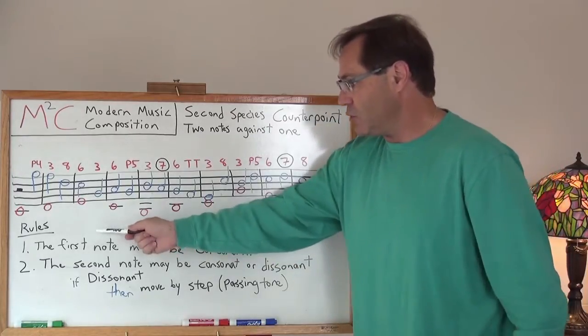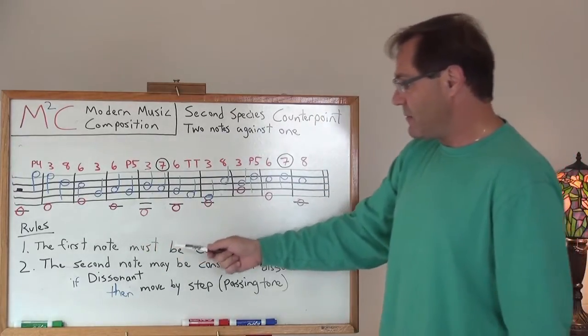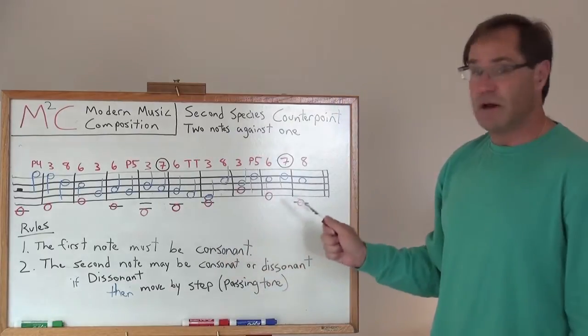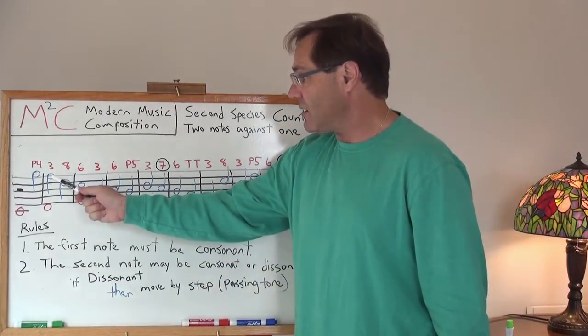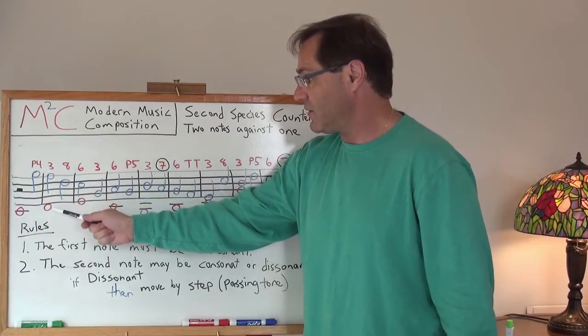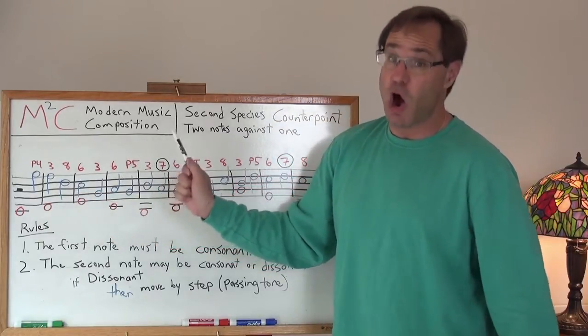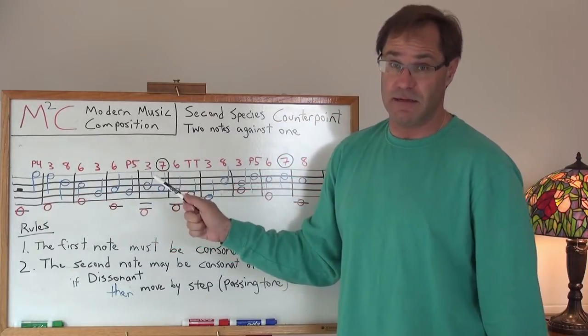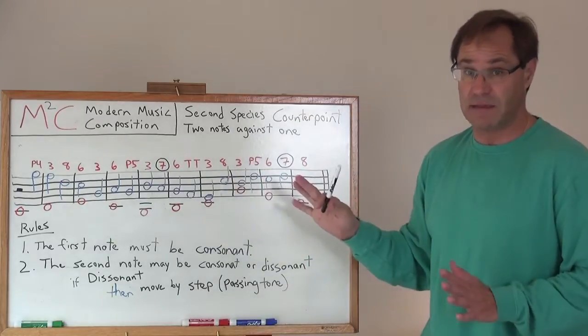I'm just going to highlight some of the new rules. And that is that the first note must always be consonant. So the first note of our counterpoint with the Cantus firmus always has to be consonant. It can be perfect or imperfect, but it has to be consonant.